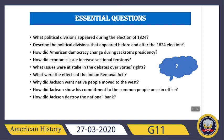I have selected a few important questions you should be able to answer after reading this chapter: What political divisions appeared during the election of 1824? How did American democracy change during Jackson's presidency? How did economic issues increase sectional tensions? What issues were at stake in the debates over states' rights? What were the effects of the Indian Removal Act? Why did Jackson want Native people to move west? How did Jackson show his commitment to common people, and how did he destroy the national bank? These are important but not the only questions.